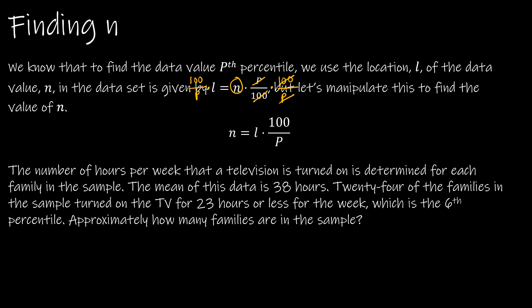Let's use that in this question that I took directly from your certifications. The number of hours per week that a television is turned on is determined for each family in the sample. The mean of the data is 38 hours. 24 of the families in the sample turned on the TV for 23 hours or less for the week, which is the sixth percentile. Now I want you to notice that in order to solve for this, I need two values, and I've underlined four values. So this is why this question might be a little bit difficult. Obviously it's going to be n equals some value for the location, then 100 divided by the percentile. Well, only one of the values is the percentile, so that one's pretty straightforward—we're going to use six.